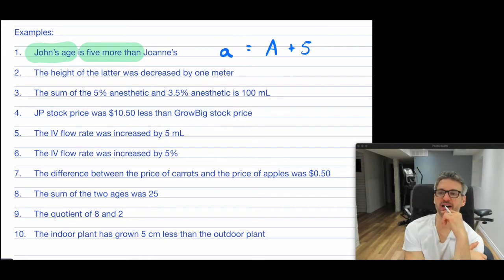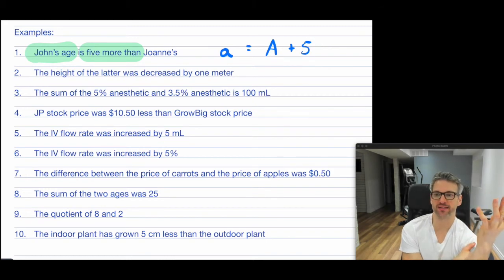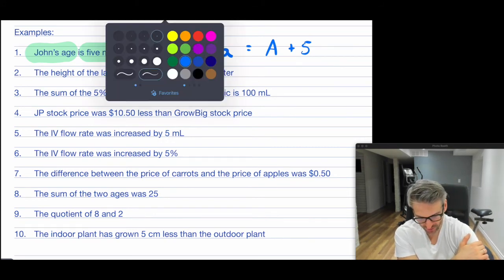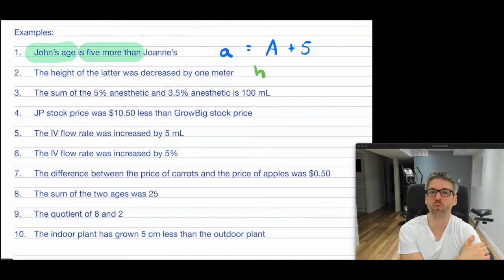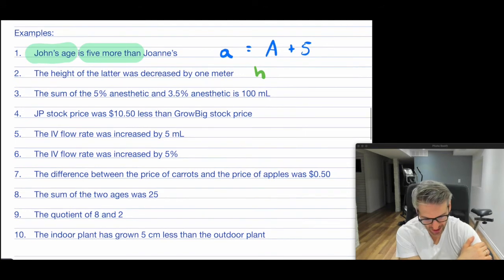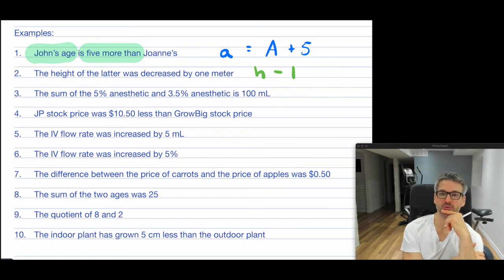The second one: "The height of the ladder was decreased by one meter." So the height of the ladder, H — the height of the ladder was decreased by one meter. So whatever the height was, now it is being decreased by one meter: H minus 1. Notice that that's tricky to try to translate back.